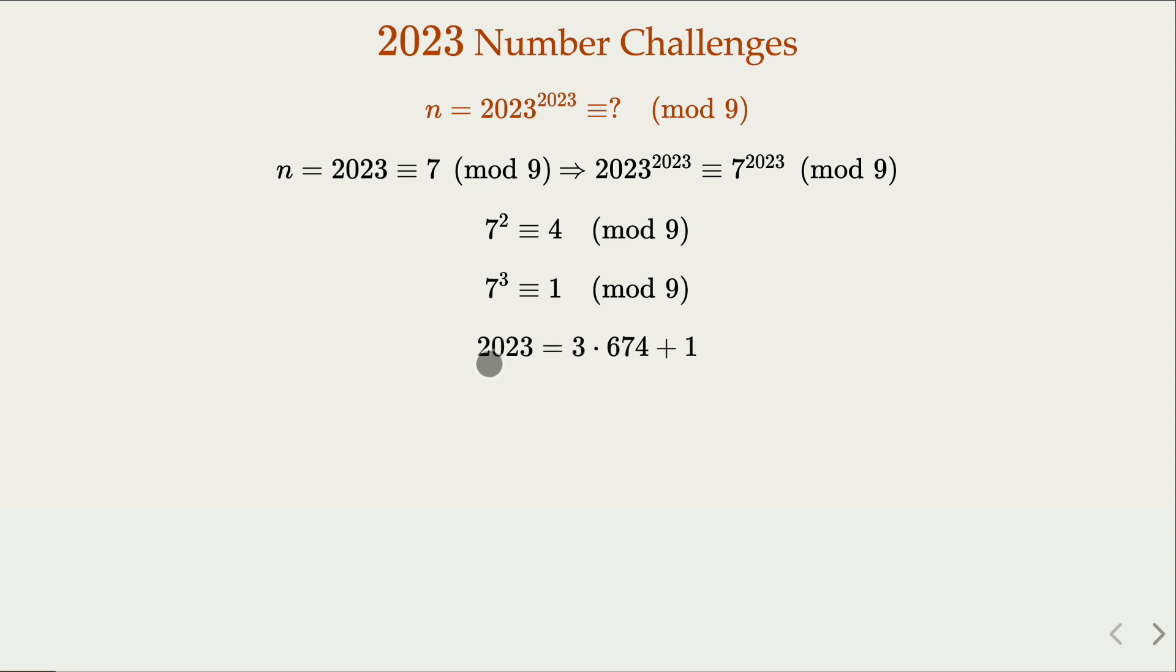Anything above that is going to be repeated in this cycle of 3. 2023 is 3 times something plus 1. So 7 raised to the 2023 power is going to be congruent to 7 raised to 1's power, and that's 7. So the whole thing is actually congruent to 7 mod 9. That's the first fact we established.